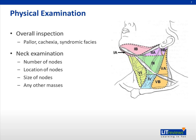When examining the nodes, it is important to note the following: the number of nodes, the location and levels of the nodes — which can give us a clue as to where the primary is from — the size of the nodes, which affects staging, overlying skin changes, and whether the nodes are matted or fixed. If there are other neck masses, please proceed to examine them thoroughly.